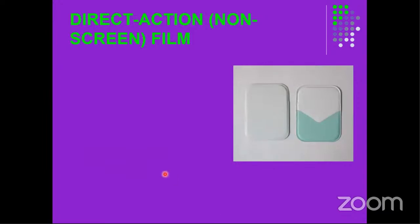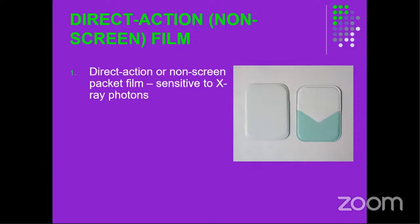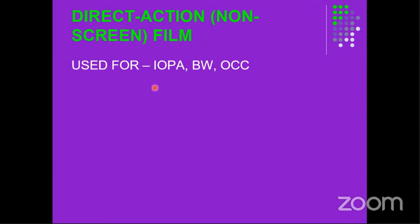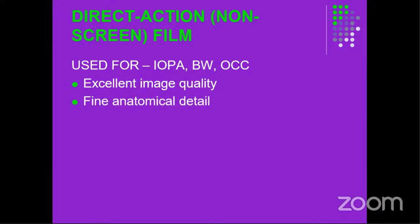Looking at the types of analog image receptors, there are two types. One is direct action or non-screen film, as demonstrated in that picture. These are direct action or non-screen packet films; they are sensitive to X-ray photons. The film is put inside the packet film as demonstrated. We use them for various intraoral radiographic techniques: intraoral periapical, bitewings, and occlusal radiographs. They provide excellent image quality and fine anatomical details, and they come in various sizes.